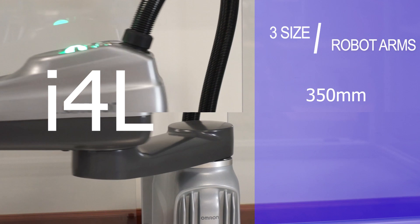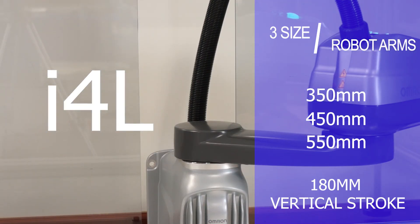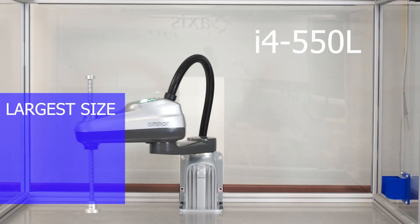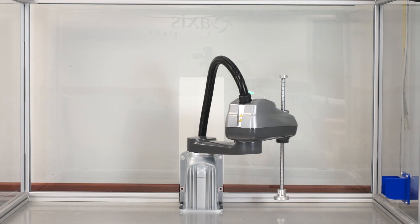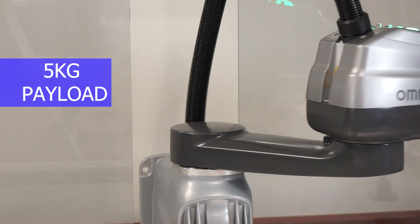The i4L family includes three sized robot arms: 350 millimeters, 450 millimeters, and 550 millimeter reach with 180 millimeters vertical stroke. The i4 550L, the largest size, is also available with a 350 millimeters z-stroke. Each robot is rated for 5 kilograms payload and offers a 0.01 millimeter repeatability.